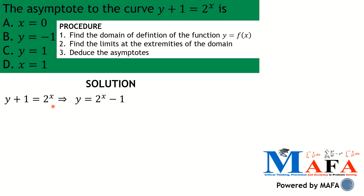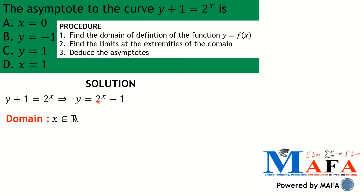The domain of definition of a function — in this case whose variable is x — are the values of x that make the function always defined, or meaningful. We start thinking about which values of x will always make two raised to the power x minus one to be defined. Since it is an exponential function, it is clearly defined for all real numbers.